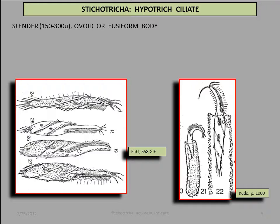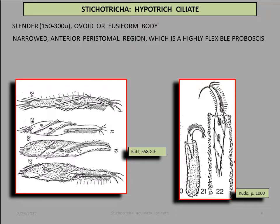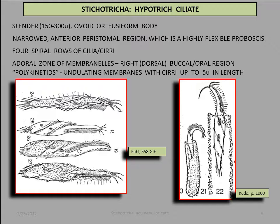Stichotrica has a slender, fusiform body, which is typically 150 to 300 microns in length. Its anterior end, which contains a lengthy peristome, is relatively narrowed and takes the form of a highly flexible proboscis. The body proper has four spiral rows of cilia. The peristomal region has an adoral zone of membranes, which are comprised of polykinetids of fused and adherent cilia.